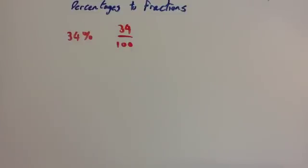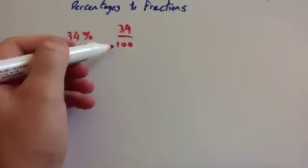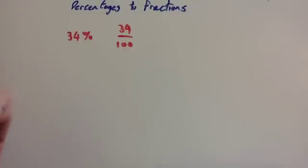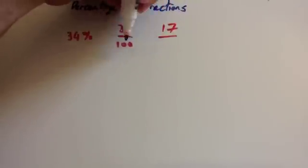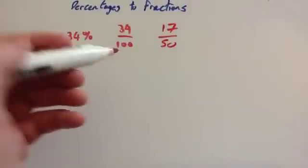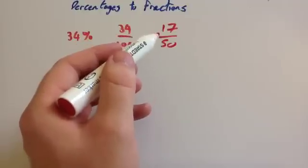Now, you need to cancel that down. So you can see both of these numbers here, 34 and 100, are both divisible by 2. So you can divide both of them by 2. Well, dividing 34 by 2 is 17, and dividing 100 by 2 is 50. So we've canceled it down to get 17 over 50.